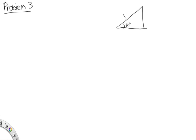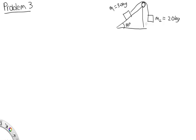Problem 3. In this problem, we've got two bodies attached to each other, one of which is on an inclined plane at 30 degrees. We have mass m1 = 3.0 kg on the slope, a pulley at the top, and mass m2 = 2.0 kg hanging down. We're asked to find the acceleration of each body. Since the bodies are tied together, they have the same acceleration. The best approach is to write simultaneous equations for the total forces acting on the two bodies using Newton's second law.